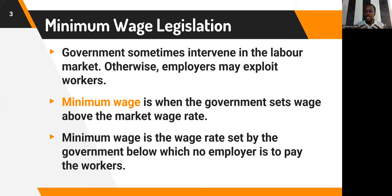We have come across this slide before in our previous lecture. We got to understand that employers sometimes may want to exploit workers — they would want to leverage economic conditions and the fact that there is high unemployment and start to pay workers very low wages. So sometimes the government comes in, intervenes in the labor market, and sets up what we call a minimum wage to prevent exploitation of workers by employers.